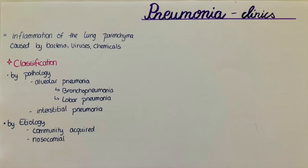Interstitial pneumonia can be either acute or chronic, and it is often idiopathic so that the pathogen or cause is unknown. But it can be infectious or caused by inhalation of noxious substances, for example cigarette smoke.